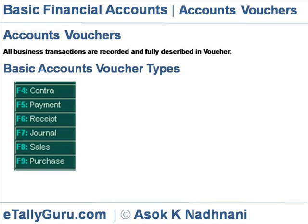F9 Purchase: all transactions of credit purchase. However, cash purchase may also be recorded through the purchase voucher. Debit and credit note vouchers: some organizations also use debit and credit note vouchers for goods return and other adjustments in respect of sold and purchased goods.